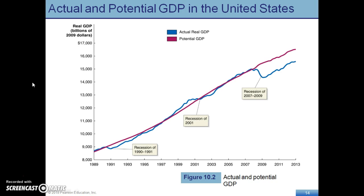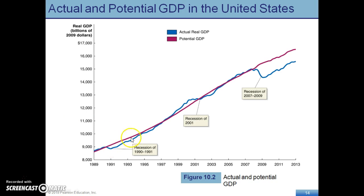Looking at the potential GDP graph: the blue line is the actual GDP and the red line is the potential GDP. When you look at the potential, you'll notice there are a lot of challenges. We want to make sure to keep growing toward that potential, but we have these fluctuations in our economy that create a lot of challenges.